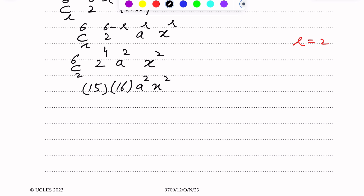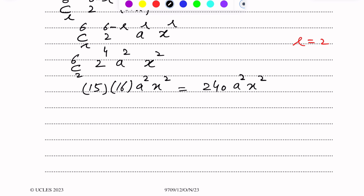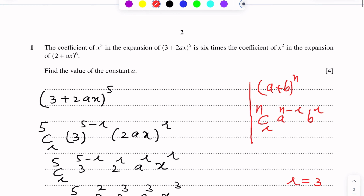Multiplying 15 and 16 gives 240. So the coefficient of x² from the second expansion is 240a².